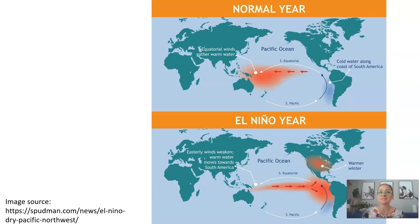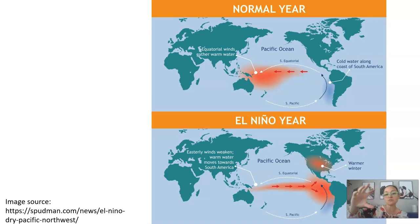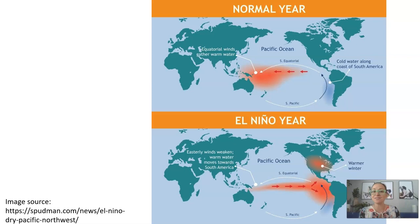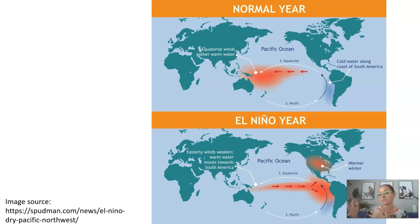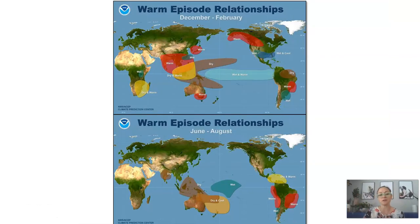El Niño is an unpredictable change — scientists have trouble predicting when it's going to happen and aren't entirely sure why it happens. Normally, a warm current travels across the ocean toward Indonesia, bringing moisture in the air that then rains down in the rainforest — the same rainforest from our discussion about orangutans and habitat loss in part one. During an El Niño year, that current switches course and actually comes back toward South America and North America, bringing warm moisture and excess rain.